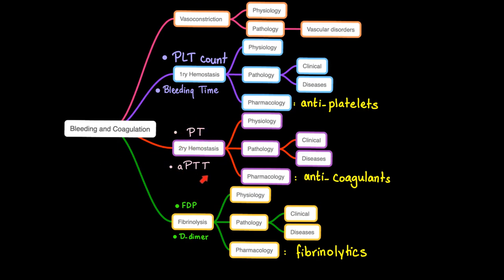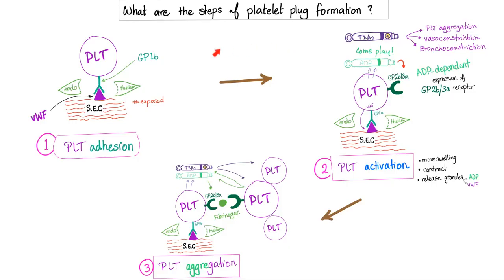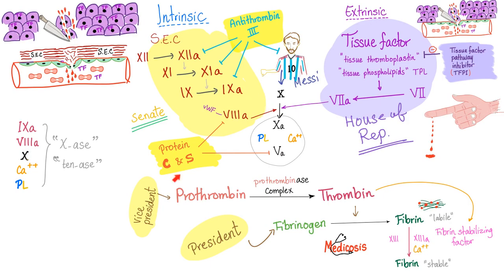Factor 10 deficiency is a problem with secondary hemostasis. What do you think is going to happen to PT and PTT? Both tests will be prolonged. Factor 10 is in the coagulation cascade — it's in the common pathway in the center. Therefore, expect that PT will be prolonged as well as PTT and even TT.